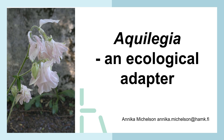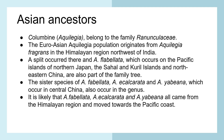Aquilegia, an ecological adapter. Asian ancestors. The Columbine Aquilegia belong to the family Ranunculaceae. The Euro-Asian Aquilegia population originates from Aquilegia fragrance in the Himalayan region on west of India. A split occurred there and Fabelata, which occurs on the Pacific Islands of northern Japan, the Sahal and Kuril Islands and northeastern China, are also part of the family tree.